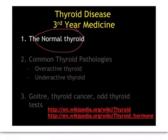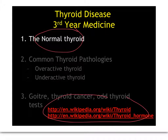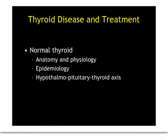And if you'd like some further background information, there are two very nice links you can get from Wiki. So here we go. This is what we're going to cover in the first part of the lecture series: anatomy, physiology, epidemiology, and about the thyroid axis as it's known.